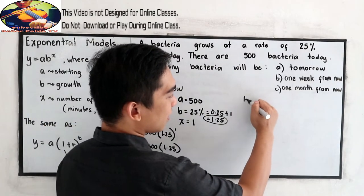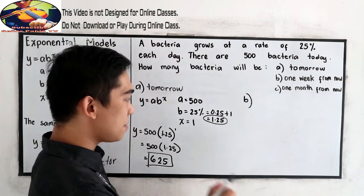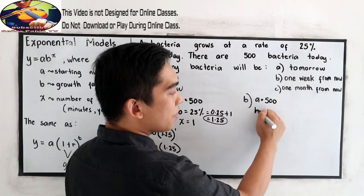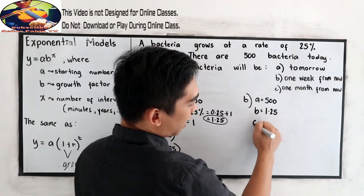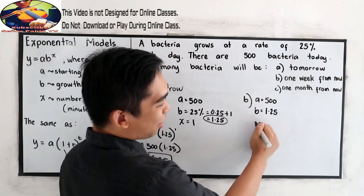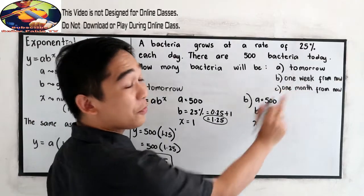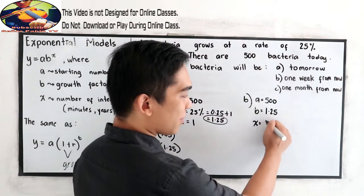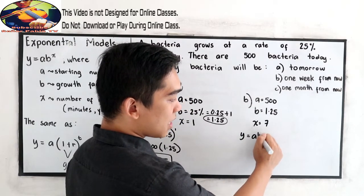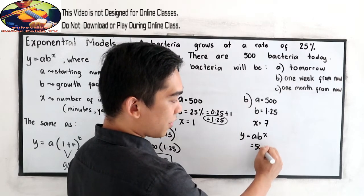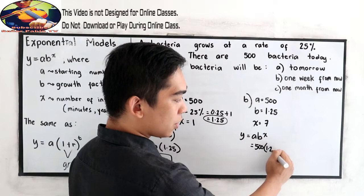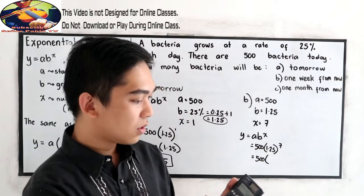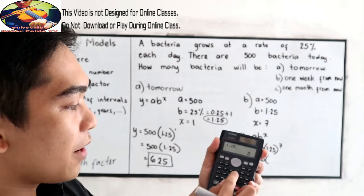Letter B — one week from now. Identify a, b, and x. Our a, the starting value, is 500. Our b is the same: 1.25. And our x is 1 week from now. How many days are in a week? There are 7, so we will use 7. So y is equal to a times b raised to x: 500 times 1.25 raised to 7.